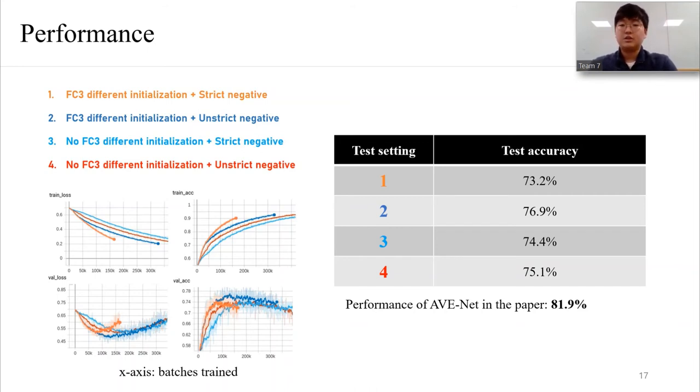Also, with using different initialization on the last fully connected layer, the model shows better accuracy. The paper says they have 81.9% accuracy. We think this difference comes from using the subset of the dataset and using different batch size.